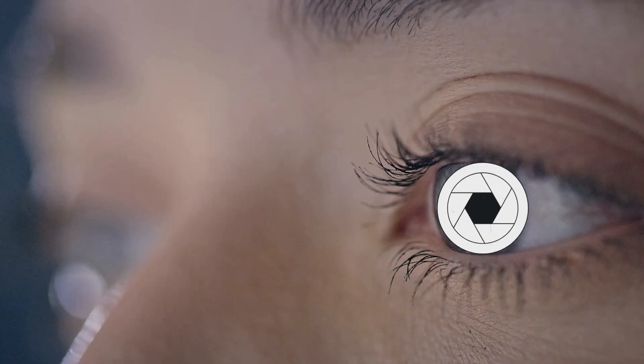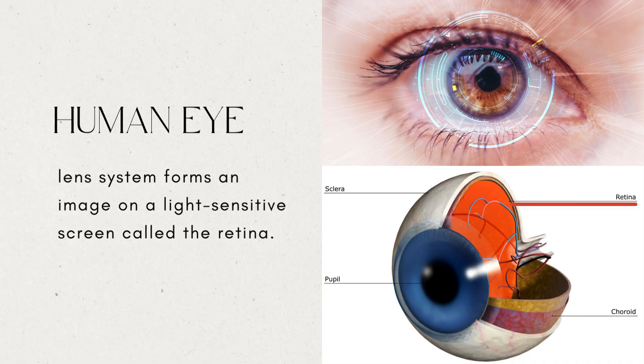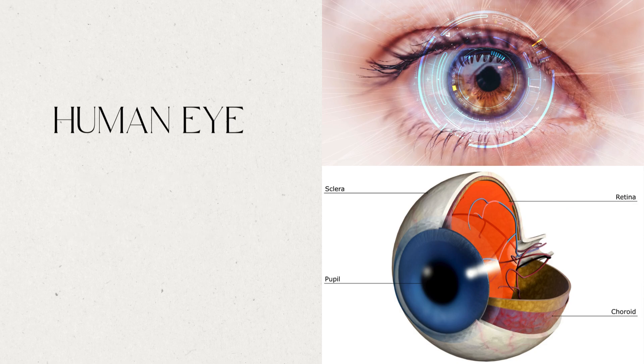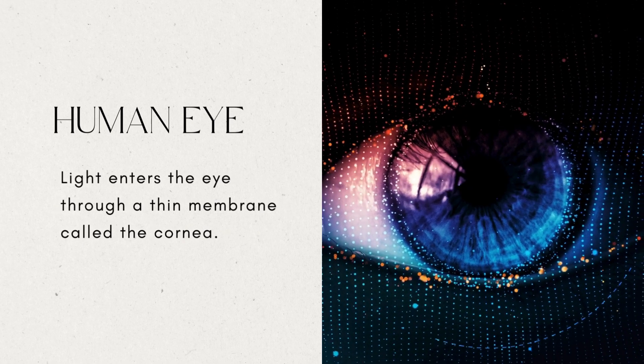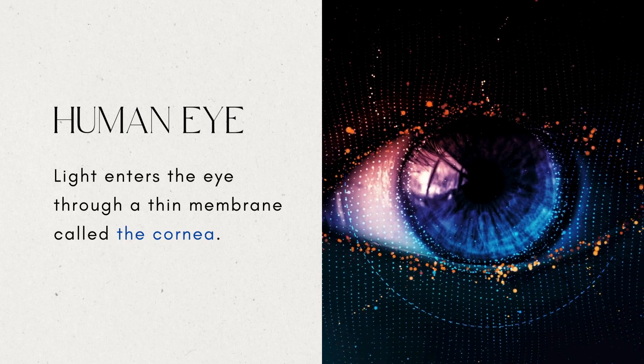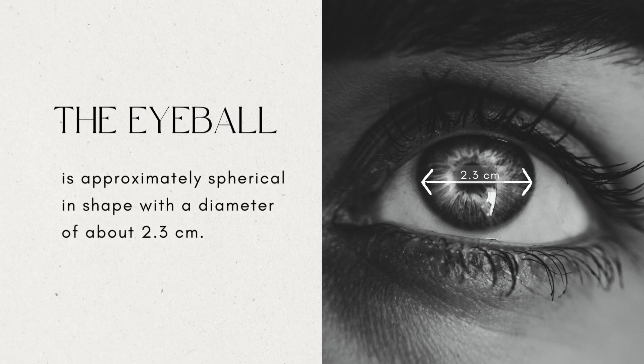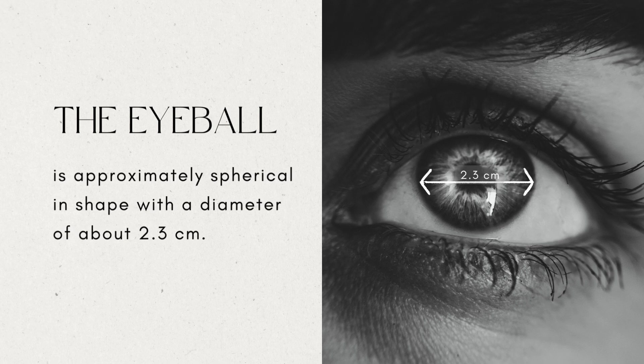The human eye is like a camera. Its lens system forms an image on a light-sensitive screen called the retina. Light enters the eye through a thin membrane called the cornea. It forms the transparent bulge on the front surface of the eyeball. The eyeball is approximately spherical in shape with a diameter of about 2.3 cm.